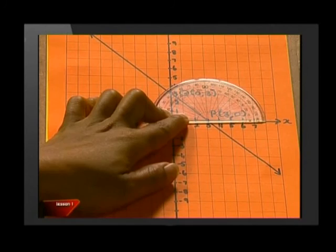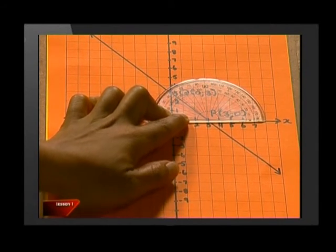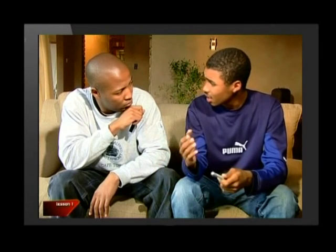But having said that, do not rely on a protractor. We need to be able to do these calculations. You're right, it is 135 degrees. So if the gradient of a line is negative, that means the inclination of the line is an obtuse angle. That's it.